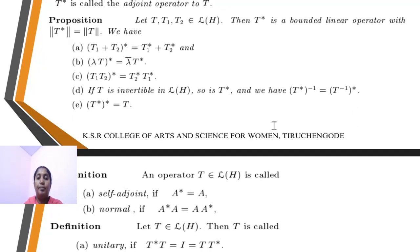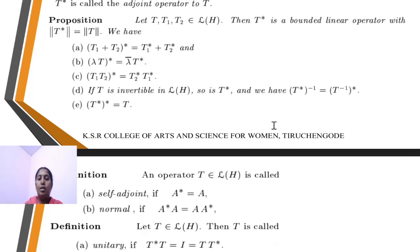Next proposition: let T₁, T, and T₂ belong to L(H). Then T* is a bounded linear operator with ‖T*‖ = ‖T‖. We have the following properties a, b, c, d, and e to be proved.